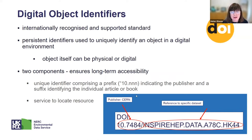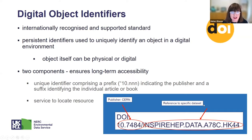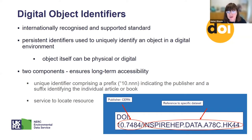A DOI is made up of two components that ensure long-term accessibility. The first part, beginning with '10.', identifies who the publisher is and the individual article or book. The second part references the specific dataset. This two-component DOI also references a service to locate the resource — for example, to find the Large Hadron Collider report with over 5,000 authors.